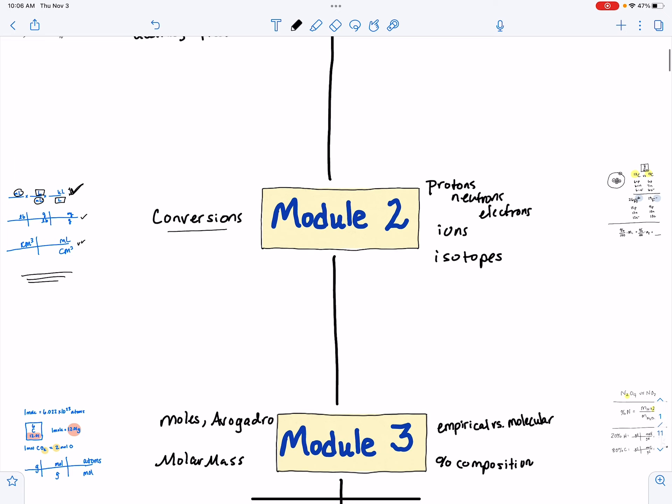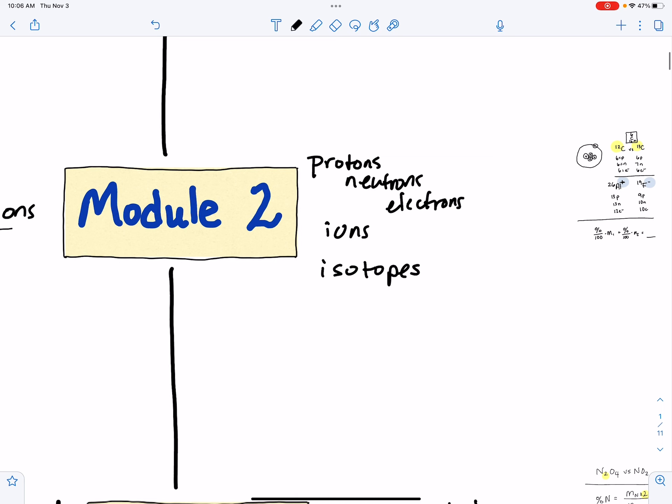Once you get through all of the conversions and allow time for that homework, you're going to go into looking at atoms. This course is in atoms first ordering, and what that means is that we begin looking at chemical systems on the atomic level, then move out to bonds, and then move out to bigger pictures.